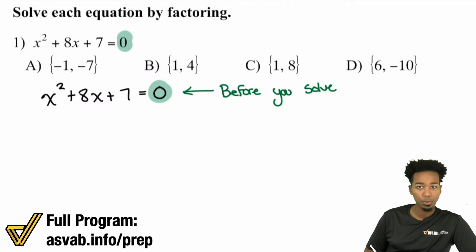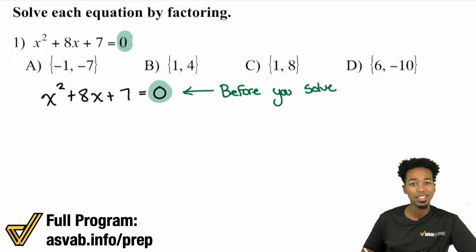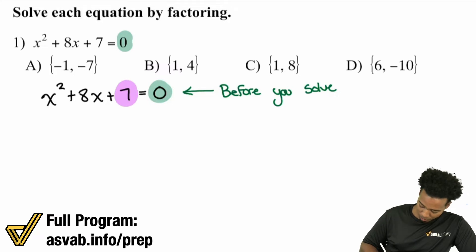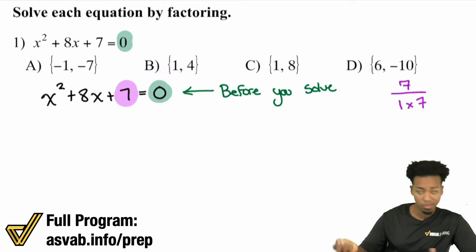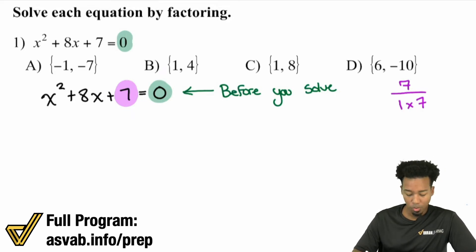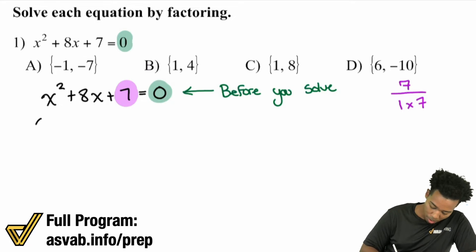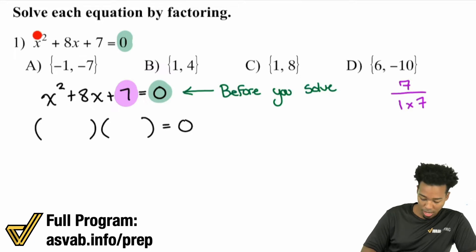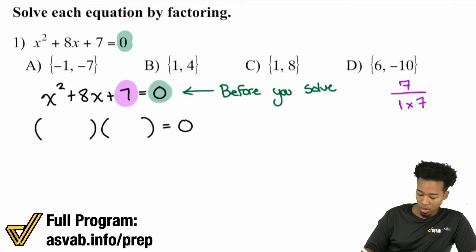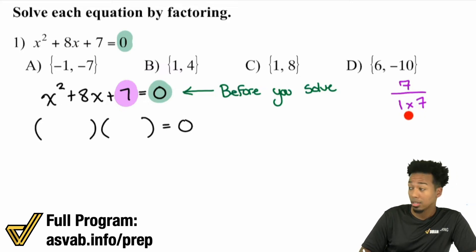When it comes to factoring trinomials, in this case we only have a 1 in front of the x squared, so we can use that simple method: find the factors of C that add up to B. Looking at the 7, the factors of 7 are simply 1 times 7. We need factors of C — the 7 — that add up to 8. Because they're both positive, 1 plus 7 is 8, and 1 times 7 is 7. That works.